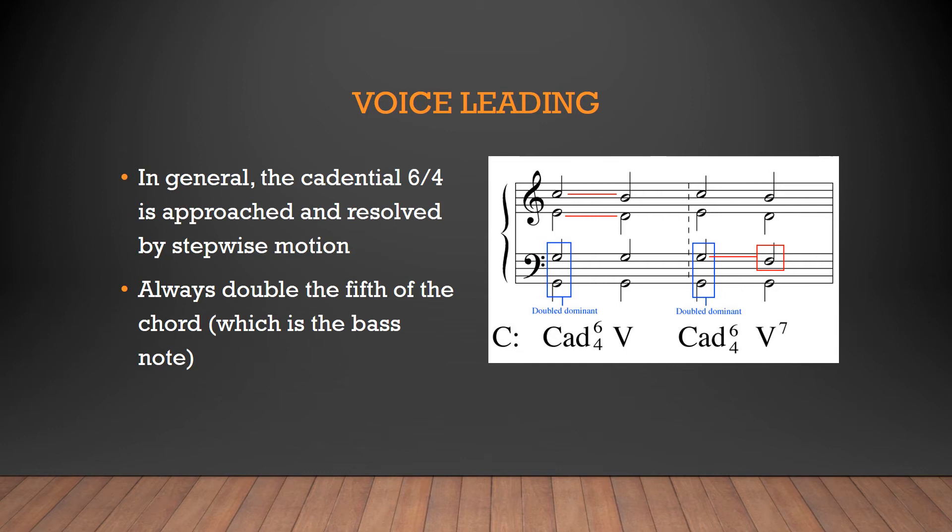If you're going to a 5-7 chord, DO and MI will resolve the same as before, but the doubled SO will resolve down to FA, which is the 7th of the 5 chord.